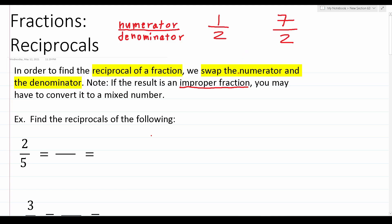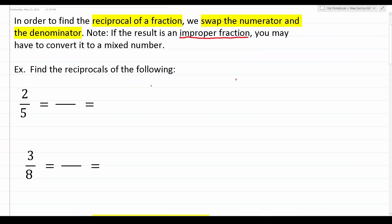Let's take a look at these examples; we'll also be converting a few improper fractions to mixed numbers, so you'll get a good review of that as well. We want to write the reciprocal of two fifths. We're just swapping the numerator and the denominator. So the five, which is the denominator, is going to become the numerator, and this two, which is the numerator, is now going to become the denominator. So the reciprocal of two fifths is five over two.